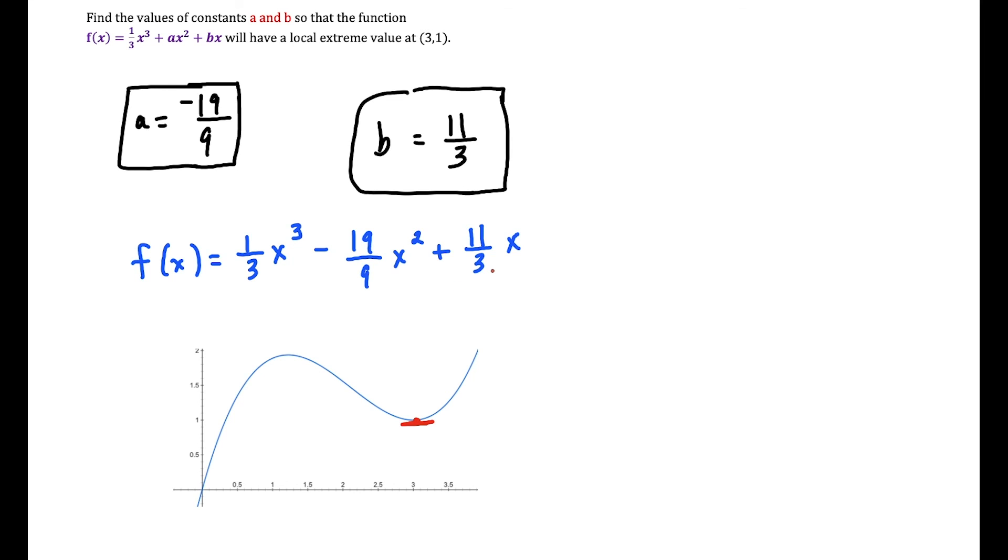If we wanted to show even more work, we could do the first derivative test here, and we would find another local extreme value at this point as well. But the main task of the question was just to solve for the constants a and b, which we did. So that's plenty for this question. Okay, well, this is going to conclude this video on applications of derivatives. If you found this video helpful, please click the like and subscribe buttons below. It really helps me grow the channel. And if you've got any requests, leave them in the comments section below. Thank you for watching.